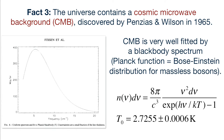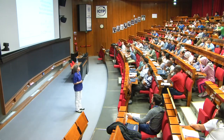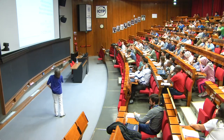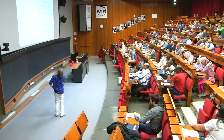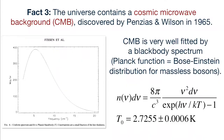Penzias and Wilson discovered that the cosmic microwave background was isotropic. To detect microwaves you need to get above the Earth's damp atmosphere, since water molecules are very good at absorbing most wavelengths of microwaves. The COBE satellite measured the spectrum of the cosmic microwave background over a wide range of frequencies and found it was extremely well-fitted by a blackbody spectrum — the distribution of photon energies had a Planck distribution, or equivalently a Bose-Einstein distribution for massless bosons.